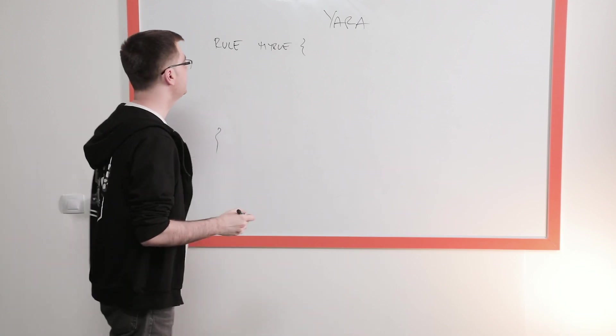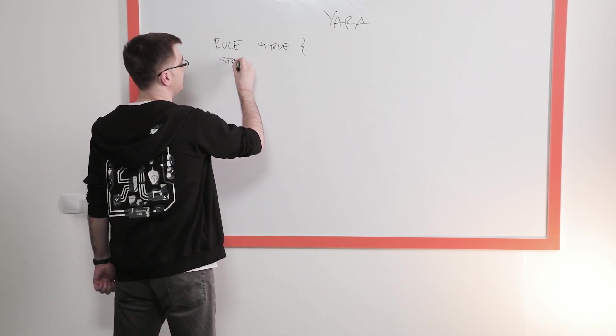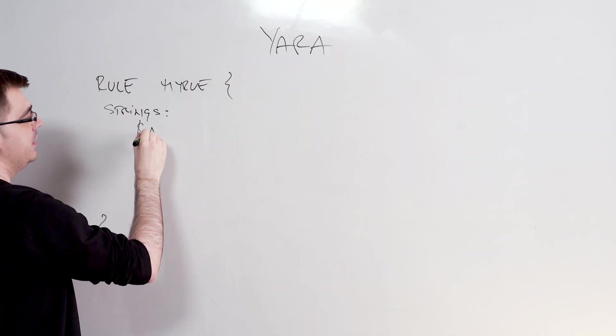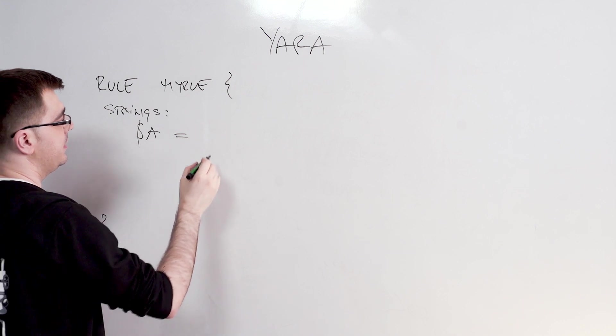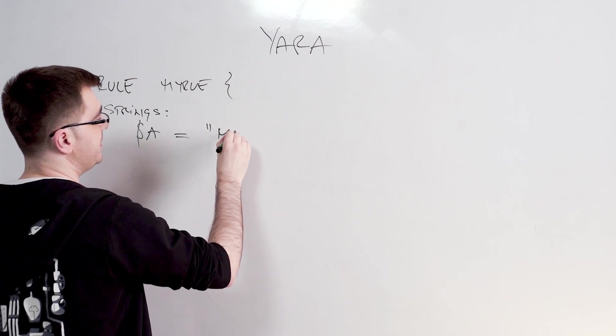And usually how people write these rules is that they're trying to match on strings. They're saying, okay, string and then the list of strings I want to find within any binary. So first string I want to find in the binary can be something simple. Let's say malware.